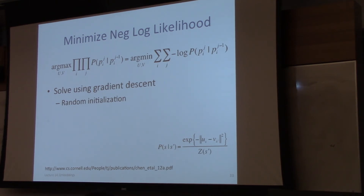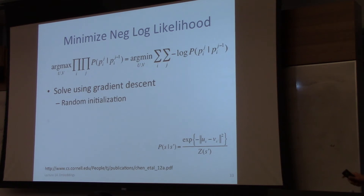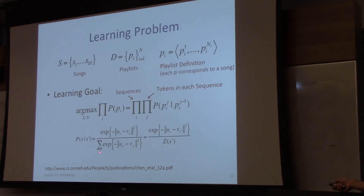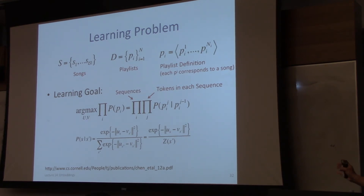There is one computational complication. Computing the gradient of the log partition function can be very expensive, because this sums over every song in the ground set. If we have a million songs, you have to sum over a million things every time you compute the gradient. Some of you encountered similar difficulties when computing the log partition function for the CRF homework.